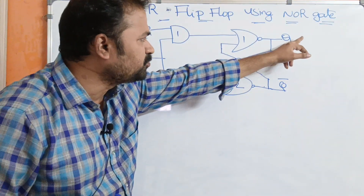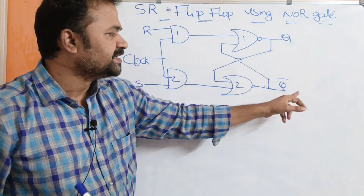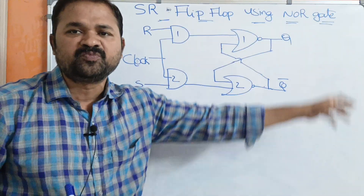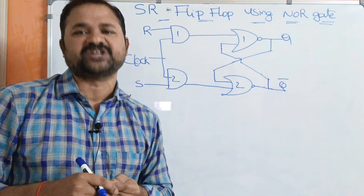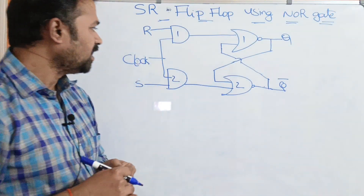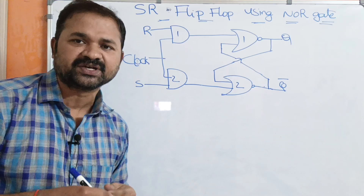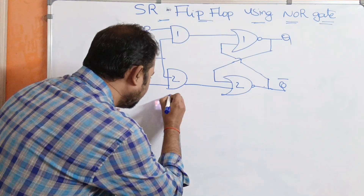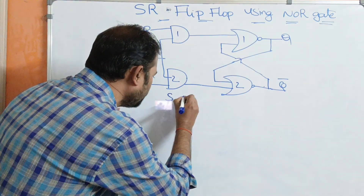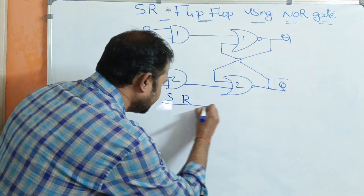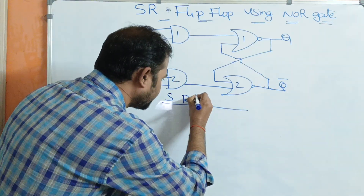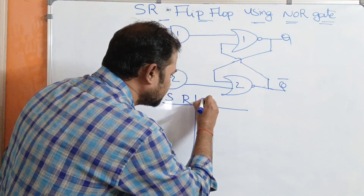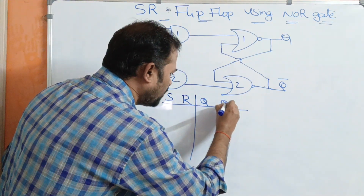Here the first output is Q and the second output is Q bar. These two outputs are complemented to each other. Now let us analyze the circuit with the help of the truth table. We have two inputs, S and R, and it produces two outputs such as Q and Q bar.